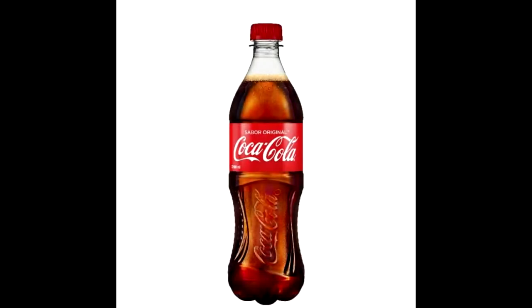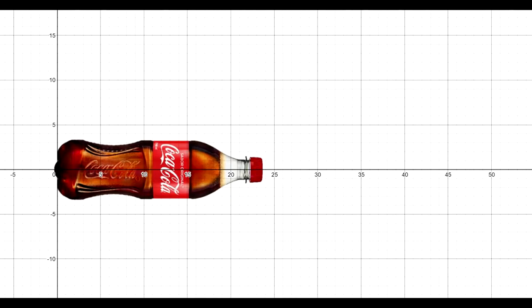First, we found a straight-on image of a Coca-Cola bottle in order to have a truthful representation of its outline. Then we continued by dropping the image in Desmos and setting its preferences so that its dimensions are the same as in the real world.